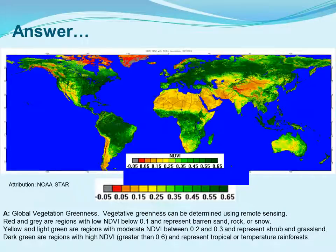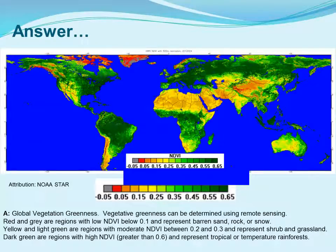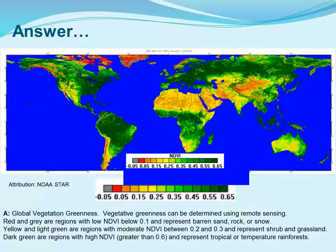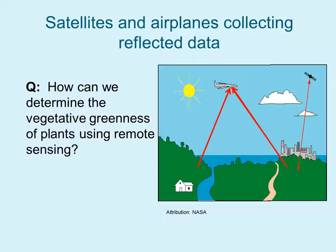Vegetative greenness can be determined using remote sensing. Red and green are regions with low NDVI below 0.1 and typically represent barren sand, rock, or snow. Yellow and light green are regions with moderate NDVI between 0.2 and 0.3 and typically represent shrub and grassland. Dark green are regions with high NDVI greater than 0.6 and represent tropical or temperate rainforests.